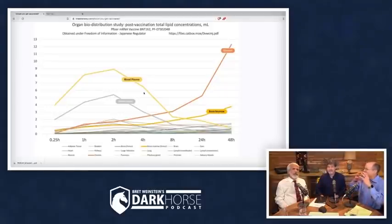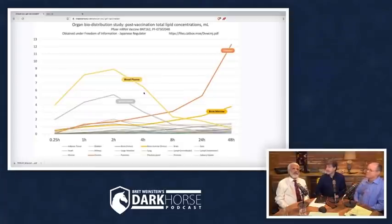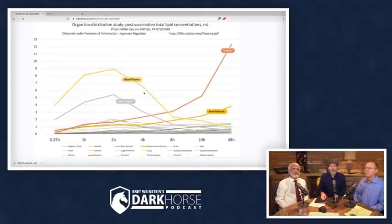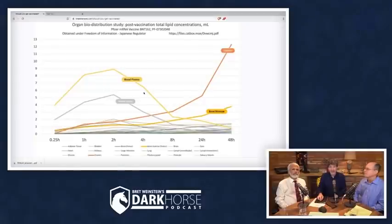This is the lipid component that does the delivery. What we've got here are different lines that tell you, over time from a quarter of an hour to 48 hours, where the concentration in various tissues are. You've got strong signals in whole blood over the first four hours — in other words, it's moving around, it's circulating. We've administered by needle into the deltoid, and you're just tracking the lipid part.